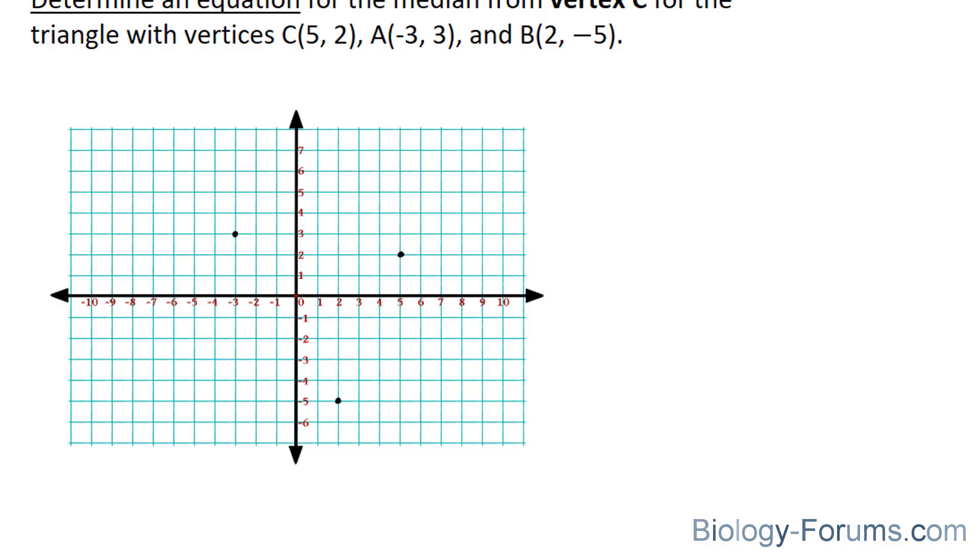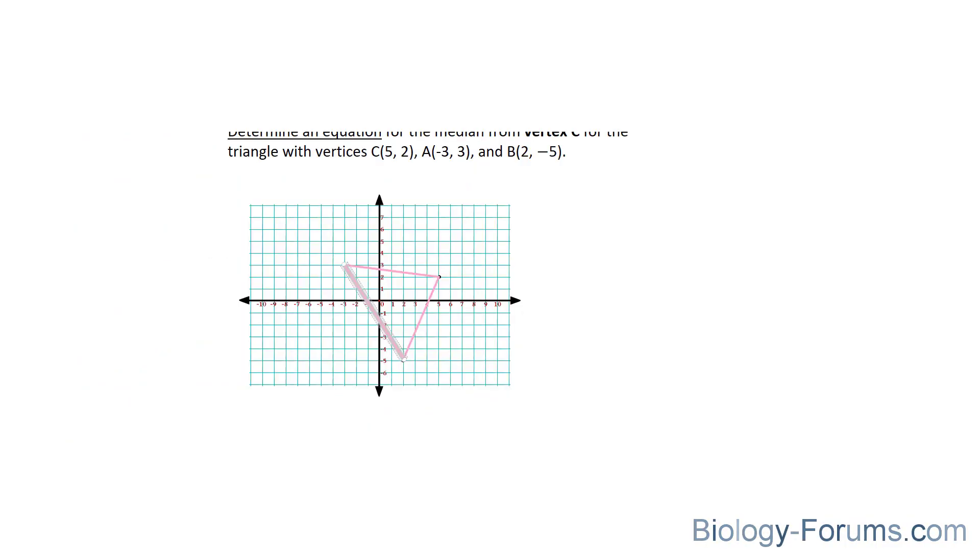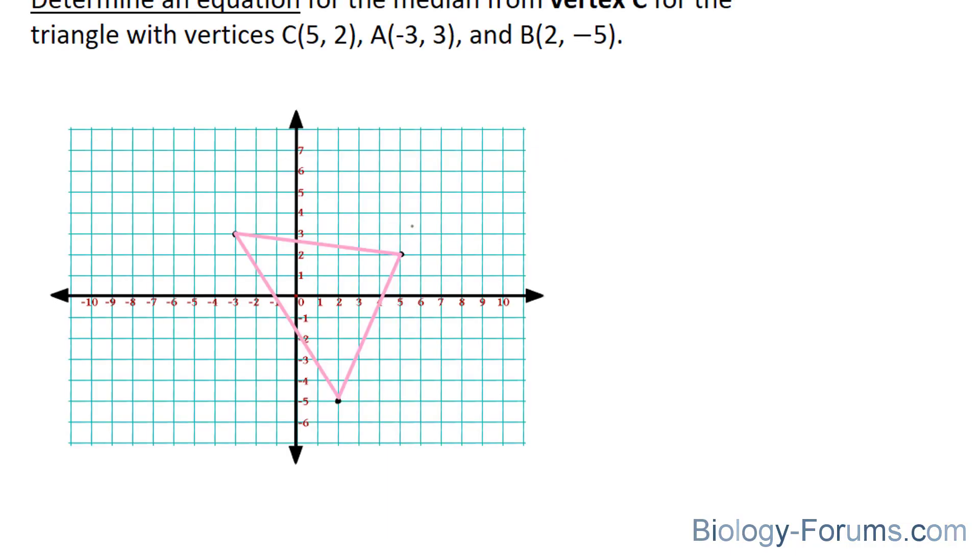And what we'll do next is connect these three points. Perfect. We'll also label them C, which is at 5 and 2, A, which is at negative 3 and 3, and lastly, B.